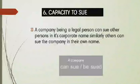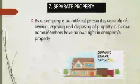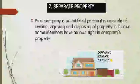The next one is capacity to sue. Capacity to sue means members can sue the company in their own name and the company can sue its members. After registration the company becomes an artificial person, so it can sue and be sued. This is called capacity to sue.